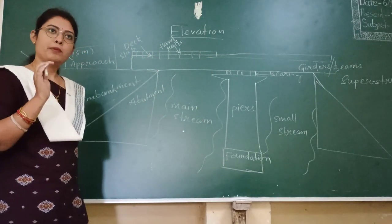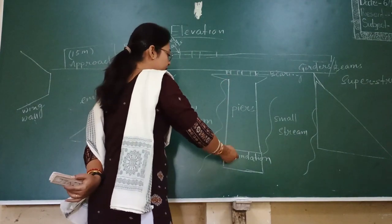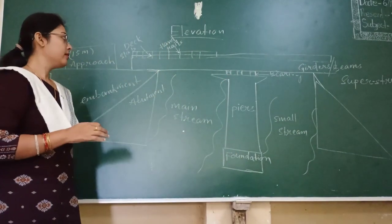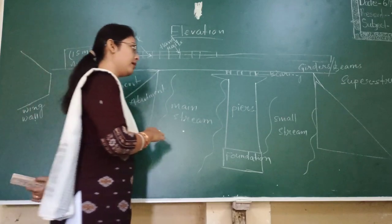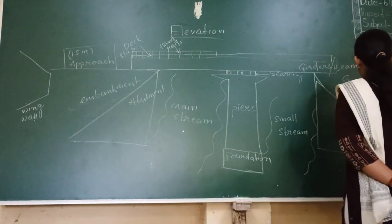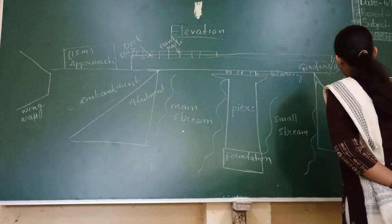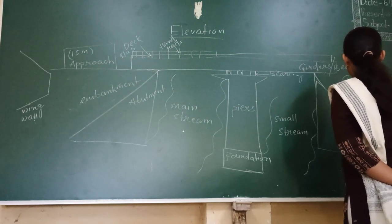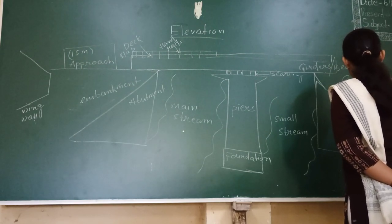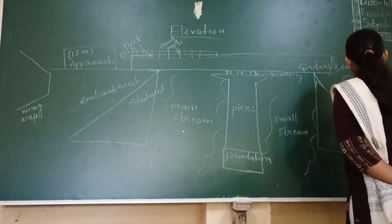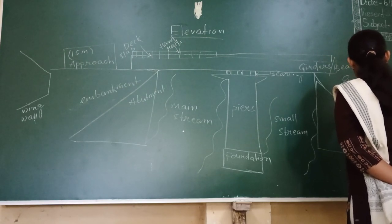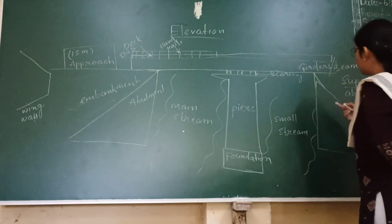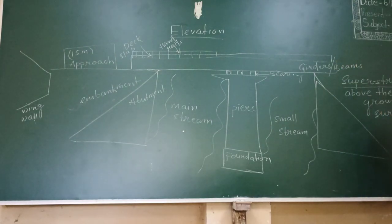So the surface which lies below the ground surface is known as substructure, and the components which lie above the ground surface are known as superstructure.